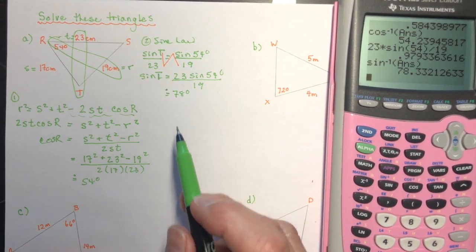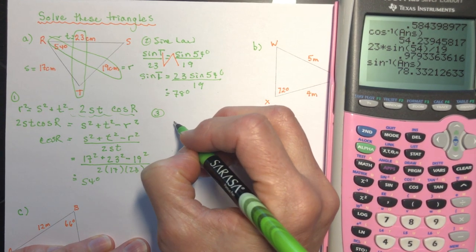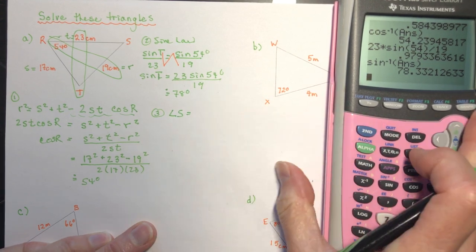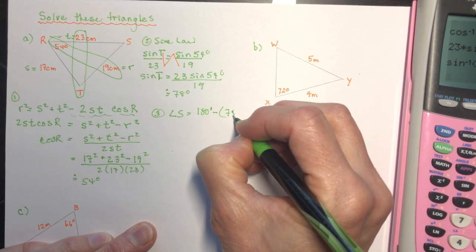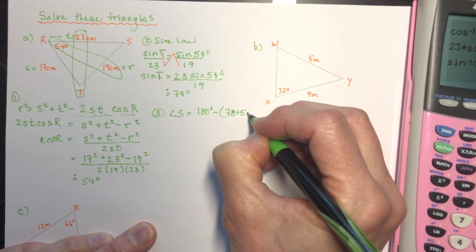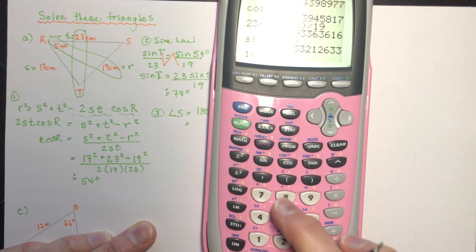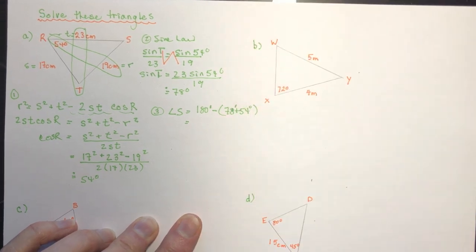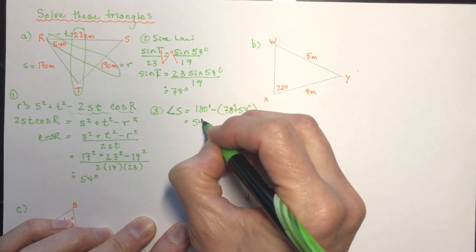Now I have three sides and two angles. Step 3: angle S equals 180 degrees minus (78 plus 54) equals 180 minus 132 equals 48 degrees. There you go — the triangle is solved.